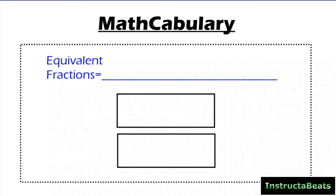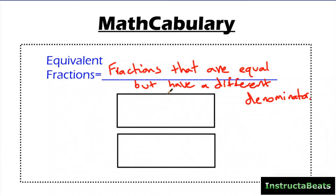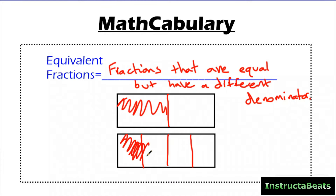We probably need to start with some mathcabulary first though. What are equivalent fractions? Equivalent fractions are fractions that are equal but have a different denominator. And that handwriting is messy, but what can you do, right? So for instance, what we mean by that is if we split this area model into half and I split this one into fourths — making equal groups because fractions are equal parts of a whole — if I shade in one half of this, that is equivalent, it is equal to two fourths. The denominators are different, it looks different, but these fractions represent the same value. That's what an equivalent fraction is.